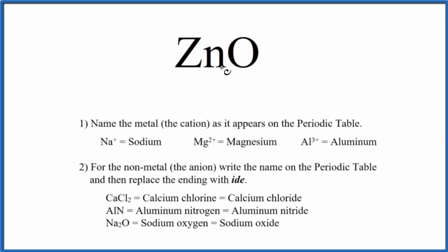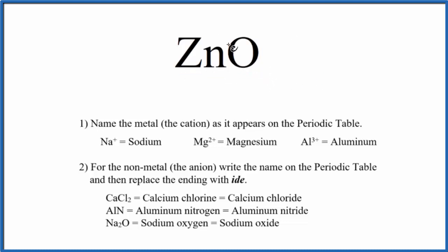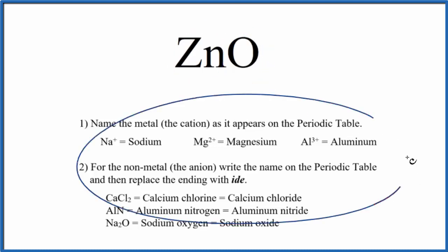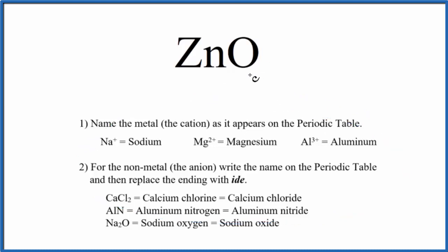To write the name for ZNO, we first need to recognize that we have an ionic compound here — that's a metal and a non-metal. Specifically, we have two different elements here, so it's called a binary ionic compound. Because of that, we'll use these rules here to write the name for ZNO.